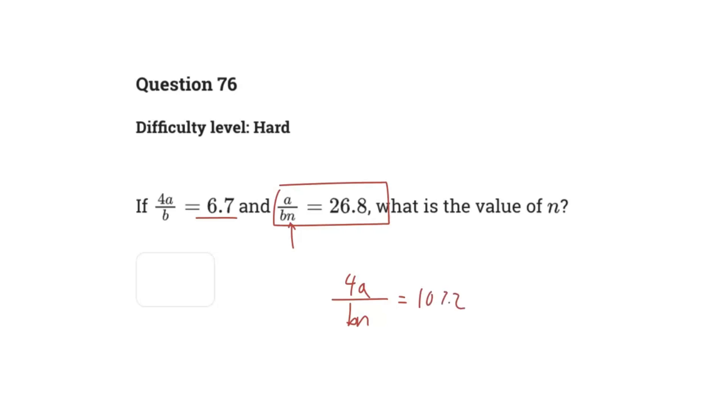All right, so now it's just time to simplify. So what value of n would make this true? Well, because we don't actually know what the value of a or b is, we have to infer that based on our given information.